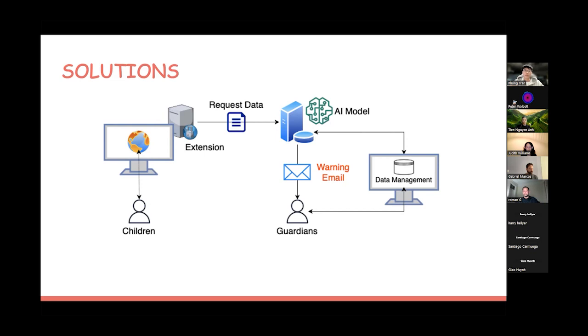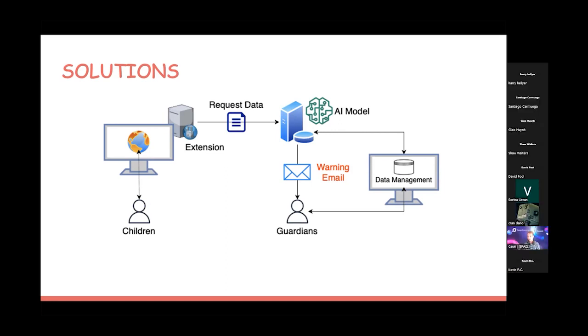Whenever children request content, it will be sent to the model and the AI model can classify whether it's toxic or not. If it's toxic, it sends a warning email to the parents. Besides, we also provide a data management UI for parents to have a view of the request history of children and give feedback to improve the AI model.